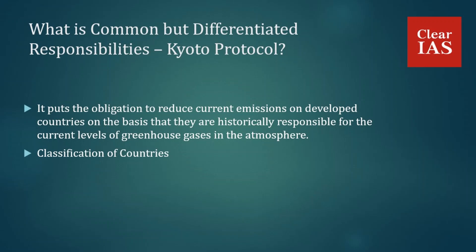'Common' means every country — both developing and developed — must take part in the fight against climate change. But 'differentiated responsibilities' means historically biggest polluters should do more compared to recent polluters, as responsibilities are proportional to pollution cost. Under CBDR, developed countries like the US and UK must accept binding limits on greenhouse gas emissions and contribute funds towards reducing emissions in developing and least developed countries. Developing countries should do everything possible but nothing is binding on them — every initiative is voluntary.